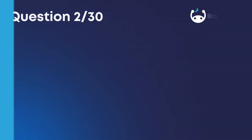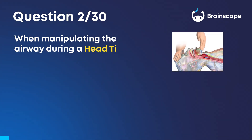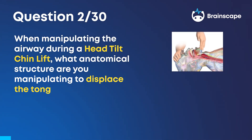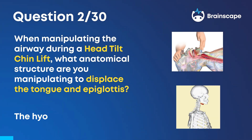Question 2. When manipulating the airway during a head-tilt-chin lift, what anatomical structure are you manipulating to displace the tongue and epiglottis? The hyoid bone.